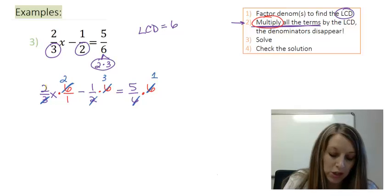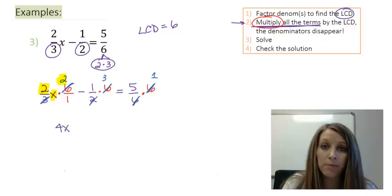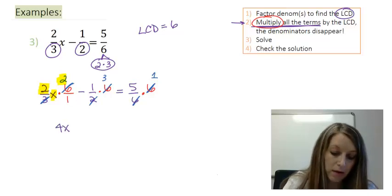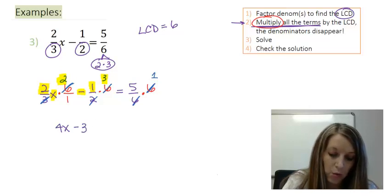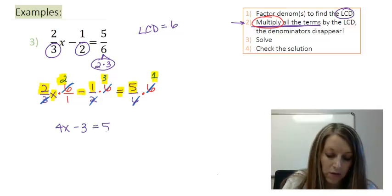So when I do this multiplication, I have two x times two, which leaves me with four x. And of course that's all over one, but I don't write it. Minus a one times three, or minus three, is equal to a five times one, or is equal to five.